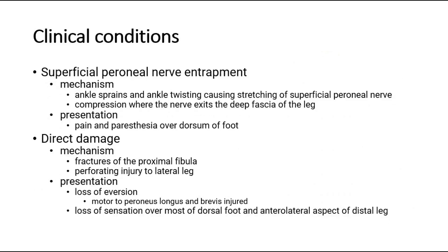For clinical conditions: superficial perineal nerve entrapment can occur from ankle sprains and ankle twisting causing stretching of the superficial perineal nerve, or compression where the nerve exits the deep fascia of the leg — patients present with pain and paresthesia over the dorsum of foot. It can also be due to direct damage to the nerve by fractures of the proximal fibula or perforating injury to the lateral leg.